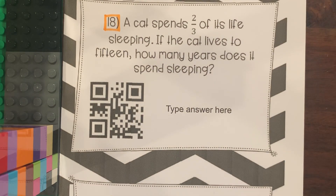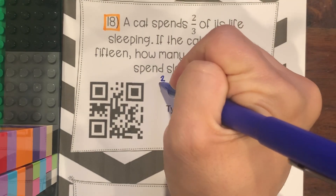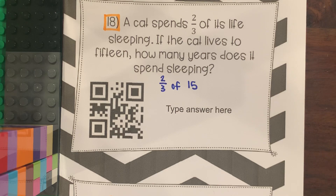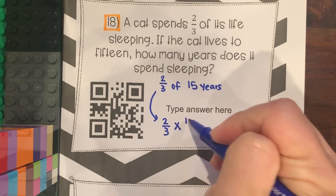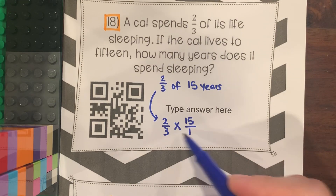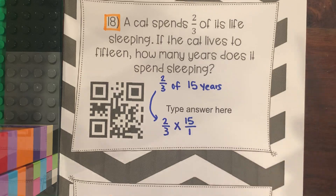Number 18: A cat spends two-thirds of its life sleeping. If the cat lives to 15, how many years does it spend sleeping? Just like the previous problem, you need to find two-thirds of 15. 'Of' means to multiply, so set up 2/3 times 15 over 1. You can multiply across and simplify, or cross-cancel 3 and 15 by 3 to get 1 and 5, then multiply across.